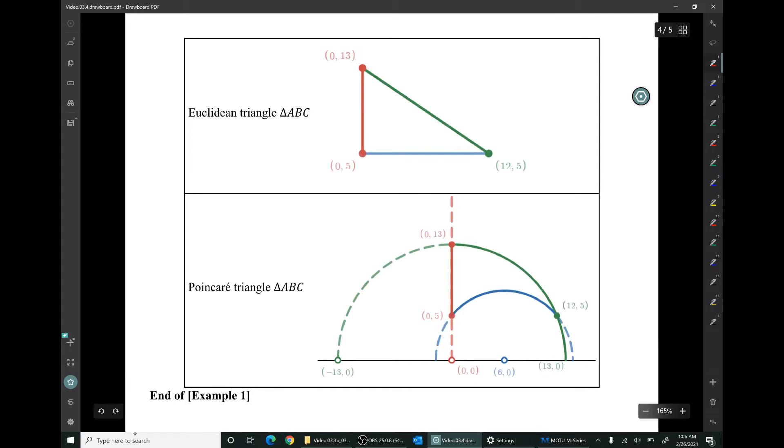Let's go on. Euclidean triangle ABC is shown here. There's A, here's B, and here's C. Nothing surprising there.